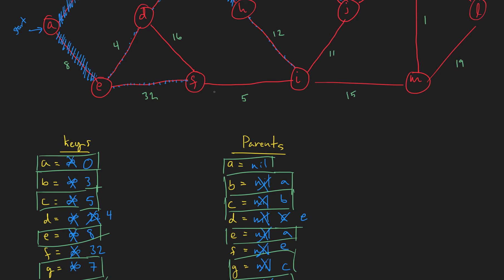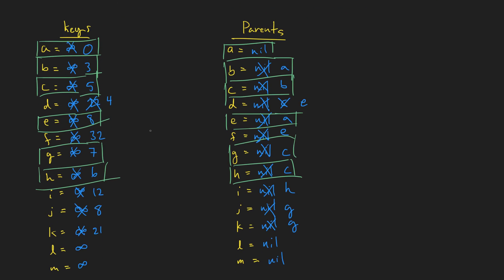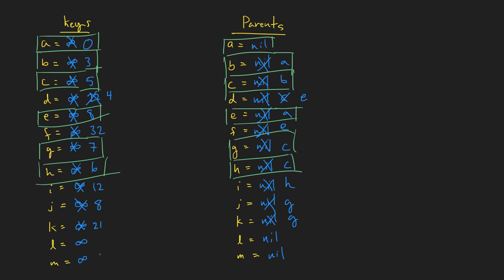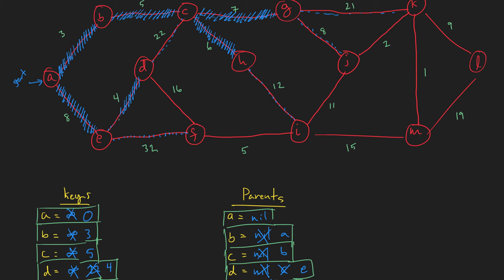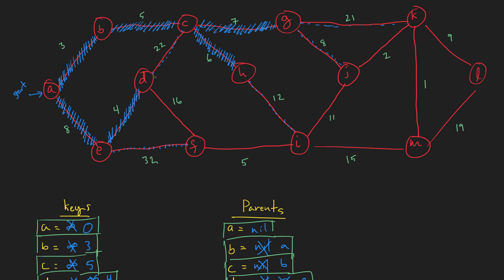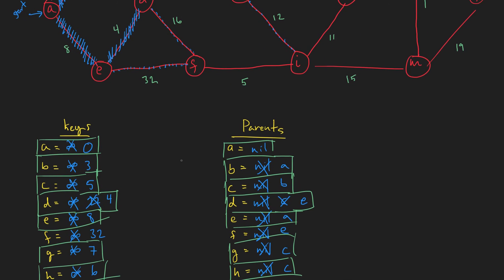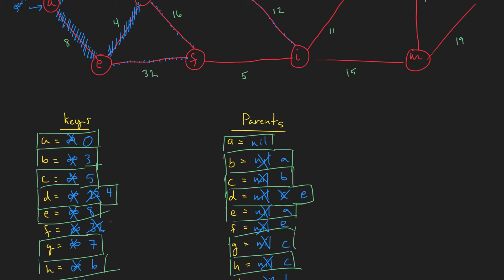There are no more edges from E, so we look for the smallest key in our priority queue. Four is the smallest, so D gets added to our tree with parent E. Now we're at D, connected to C and F. C is already in the tree so we skip it. F is 16, and 16 is less than 32, so we update F to 16 with new parent D. There's nothing left to update from D.